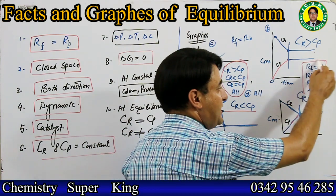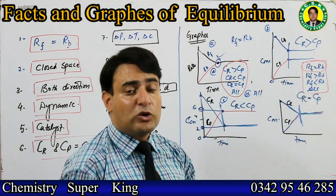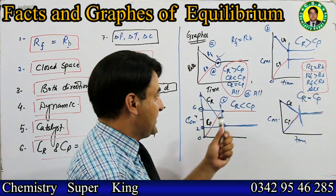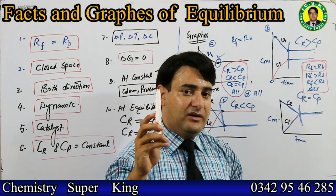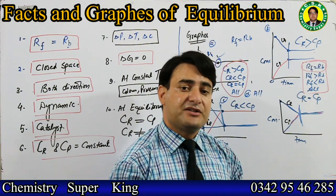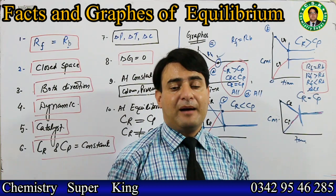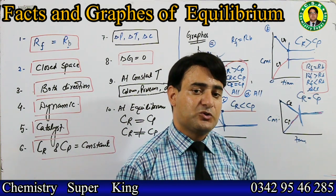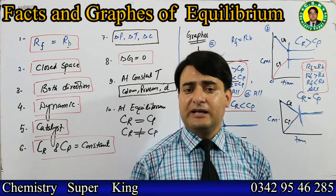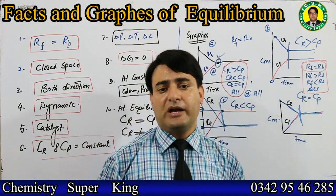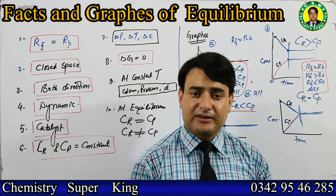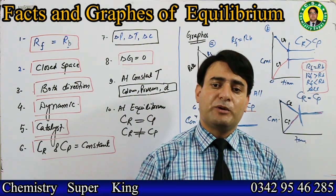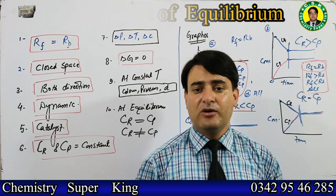At equilibrium, it is not necessary that reactant and product concentrations are equal - they must be constant. They can be equal or unequal. At equilibrium, the forward and backward reaction rates are always equal. These were the equilibrium-related graphs and facts. Now I will solve some equilibrium MCQs and then we'll end today's session. There is also a previous video on this chapter which you should watch. Make sure you take notes to get maximum benefit.